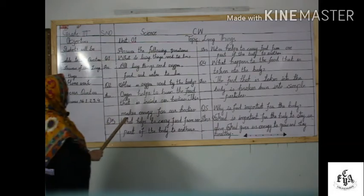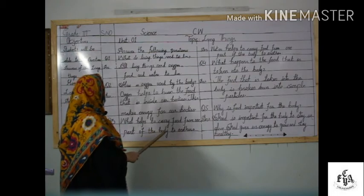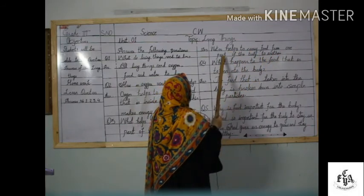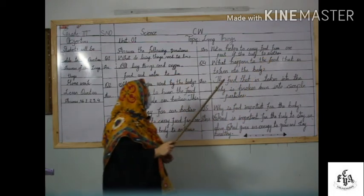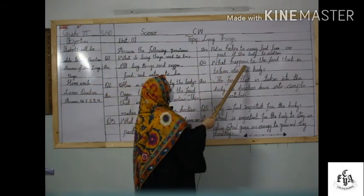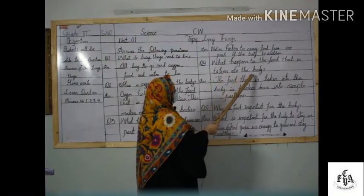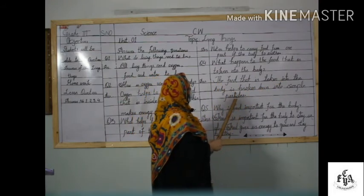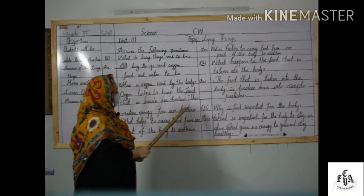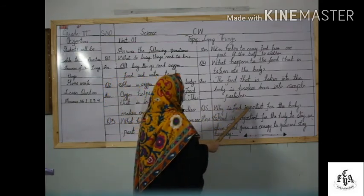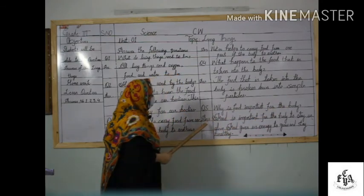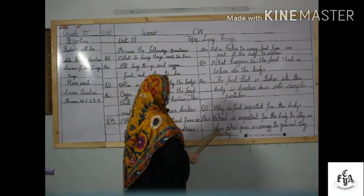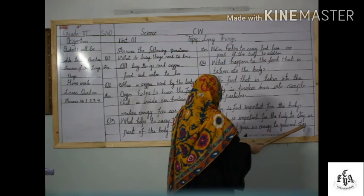Question number three: what helps to carry food from one part of the body to another? Answer: water helps to carry food from one part of the body to another. Question number four: what happens to the food that is taken into the body? Answer: the food is broken down into simple particles. Question number five: why is food important? Answer: food keeps us alive, gives us energy to grow, and helps us stay healthy.